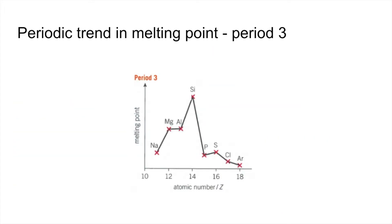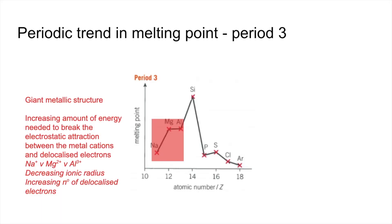Moving on to period 3, we've got the same general profile — an increase for the first four elements, then it goes quite low with some variation. The first three elements are metals, so exactly the same as before: an increasing amount of energy is needed to break the electrostatic attraction between the metal cations and the delocalised electrons. We have Na⁺ versus Mg²⁺ versus Al³⁺ — decreasing ionic radius, increasing number of delocalised electrons, and therefore stronger metallic bonding as a result.